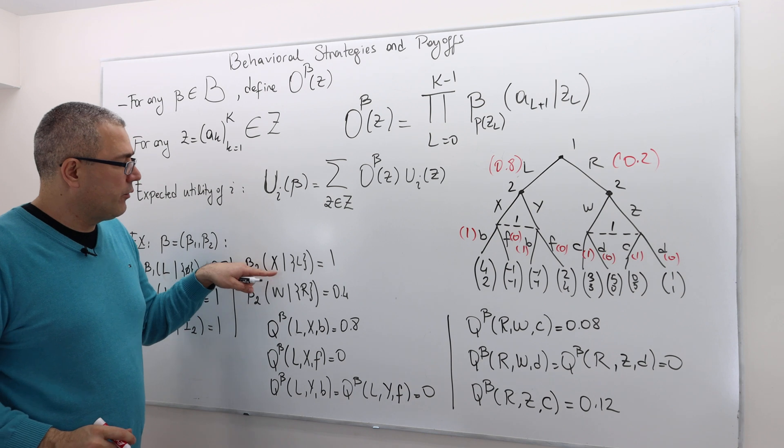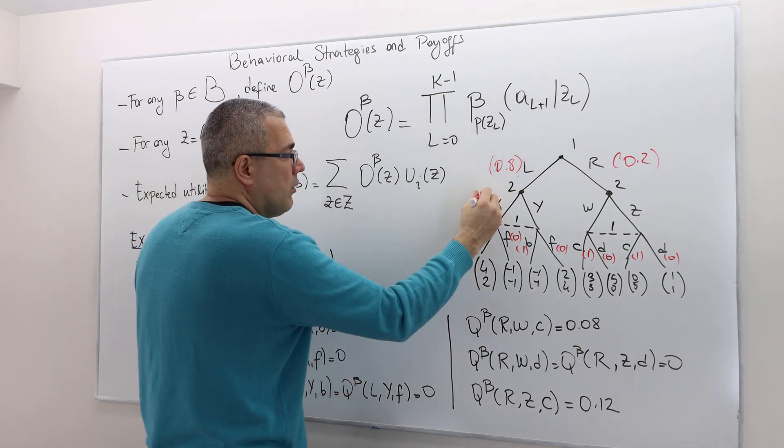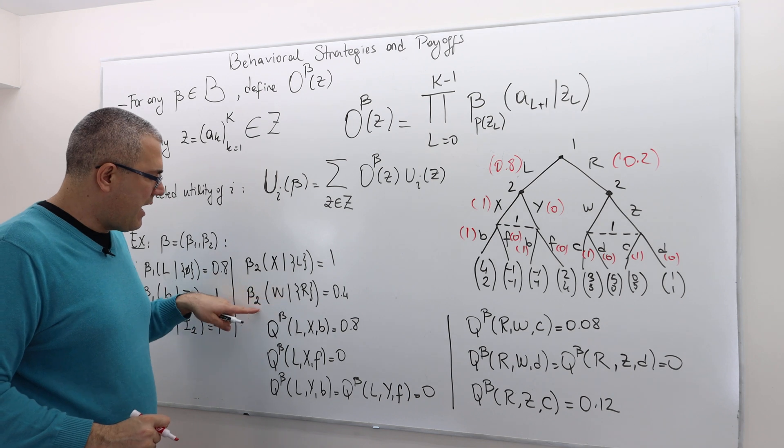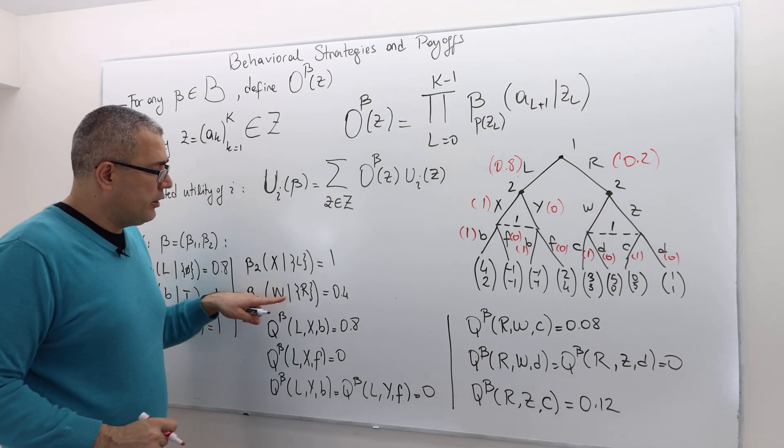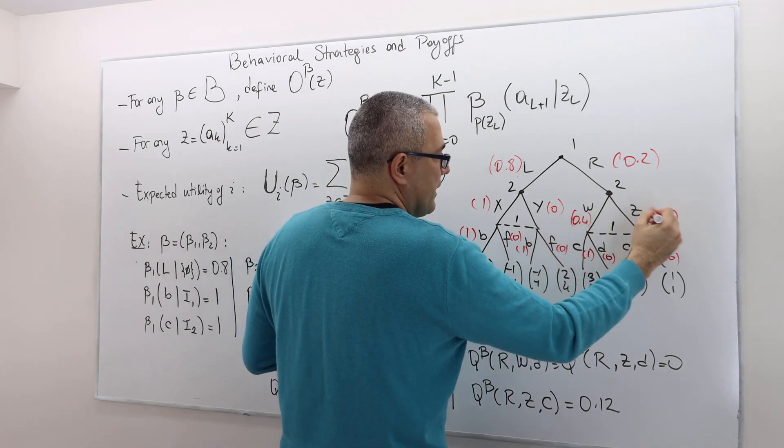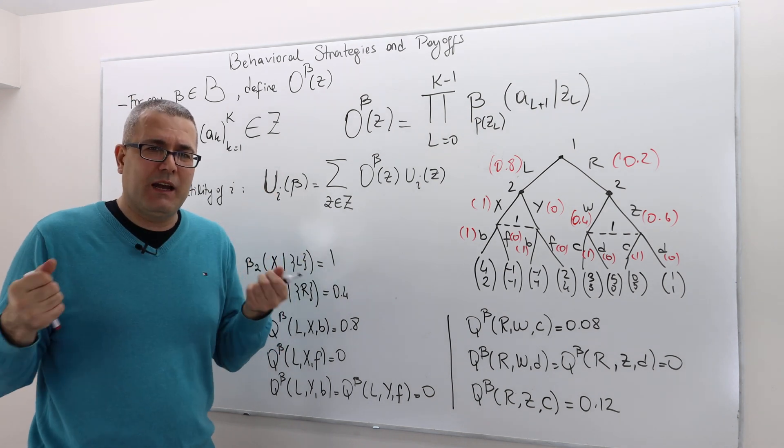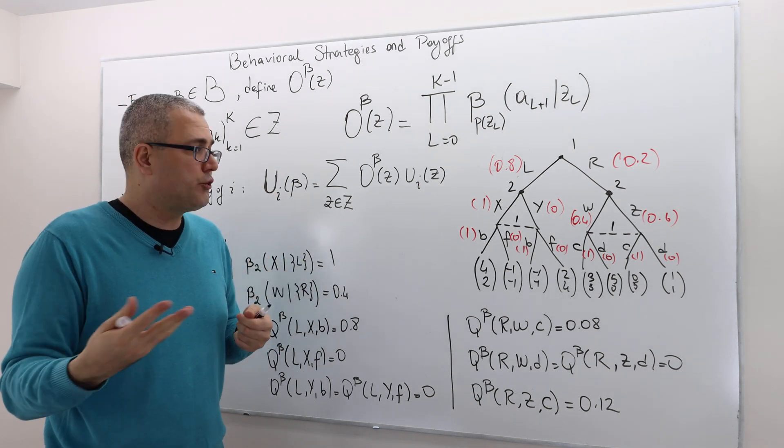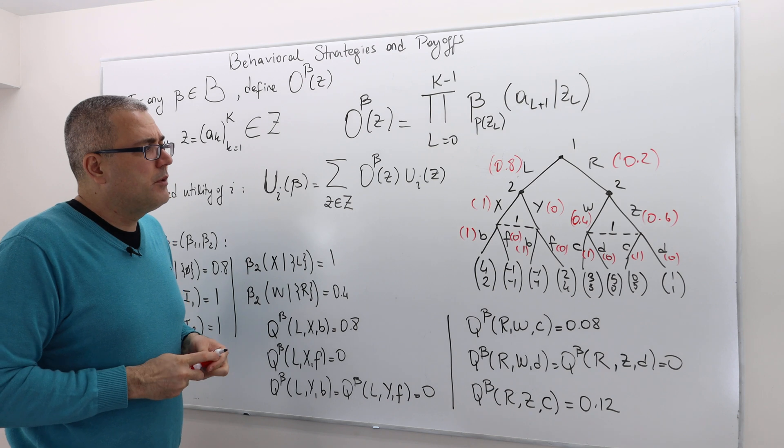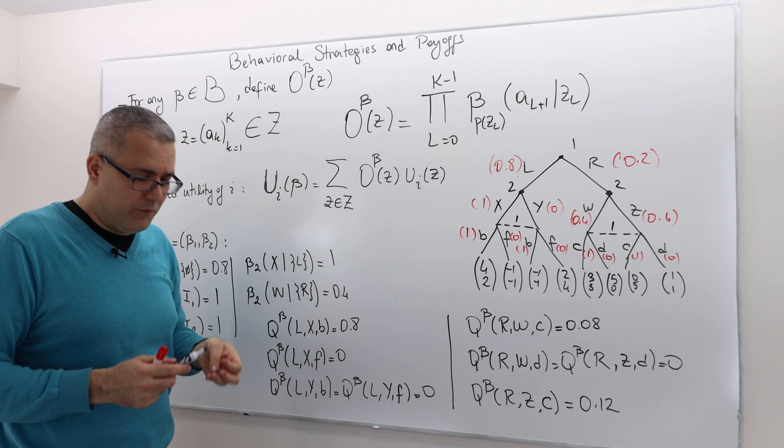Player 2 is going to play X at this decision node with probability 1, so she's going to play Y with probability 0. And she is playing W after R with probability 0.4, and then Z with probability 0.6, because there are only two available actions, and their probabilities must add up to 1. This is what probability distribution means.